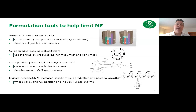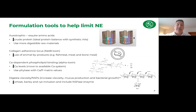Recall that the NetB toxin has a collagen adherence locus, meaning it binds to collagen — an animal protein. So limiting the use of fish meal, meat and bone meal, or other animal byproducts containing collagen could theoretically help reduce the proliferation of Clostridium perfringens in the gut. In previous work, I developed a challenge model on necrotic enteritis and was able to demonstrate that this is indeed a key predisposing factor. Third, regarding calcium levels: since alpha toxin is calcium-dependent, the more available calcium in your diet, the greater the predisposition to NE.